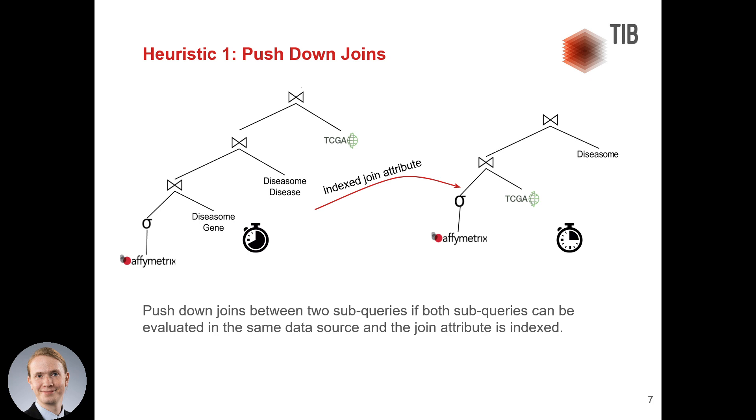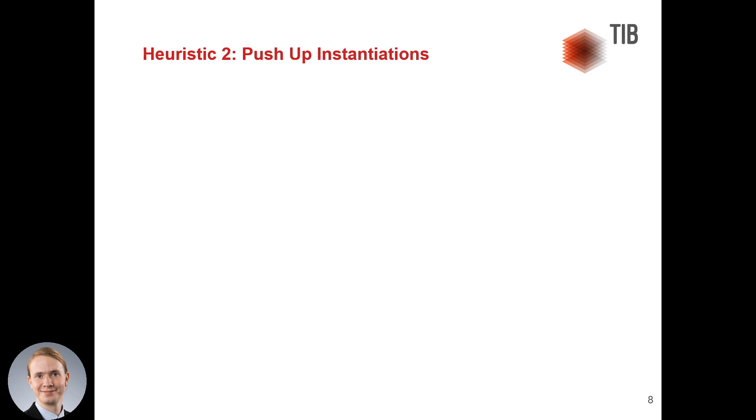So we will push down joins between two subqueries if both subqueries can be evaluated in the same data source and the join attribute is indexed. But what about filters?